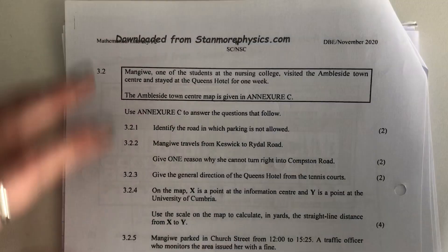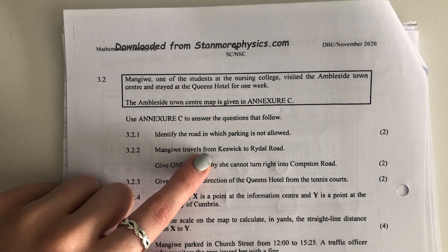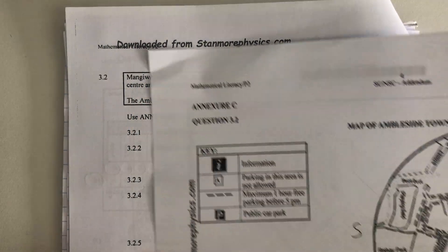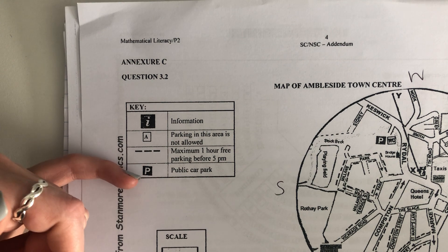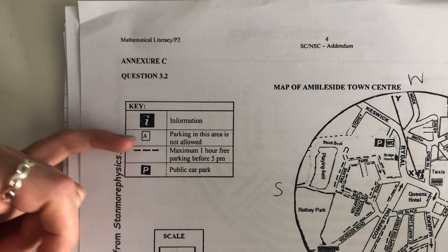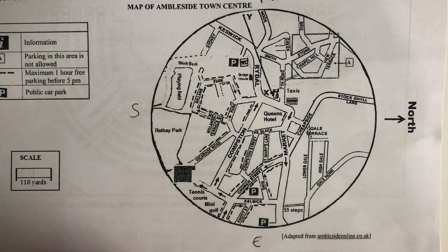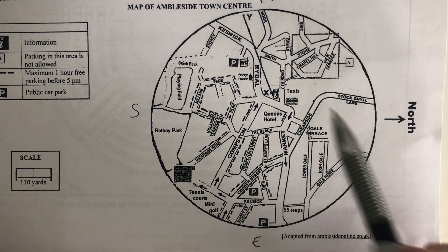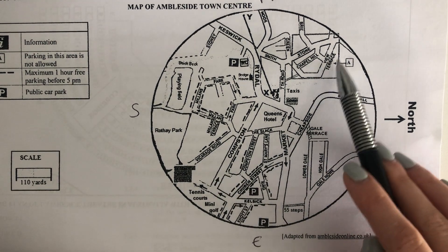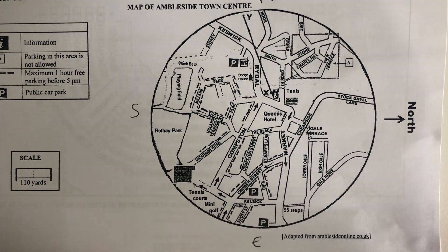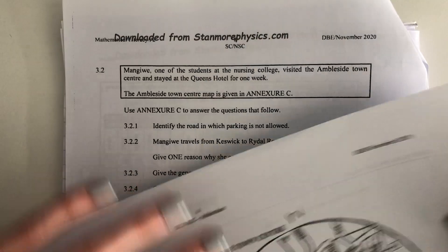Let's look at the questions. It says: use the annexure and identify the road in which parking is not allowed. When it gives you a question like that, you should go to the key because that's going to give you an indication of where to look. We look through the key and we see that parking is not allowed in areas where a little box with an A in it is shown. We go to the map and find where there's an A in a box — and it's pointing to View Terrace. So no parking is allowed on View Terrace according to the map.